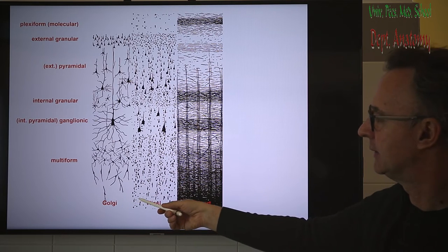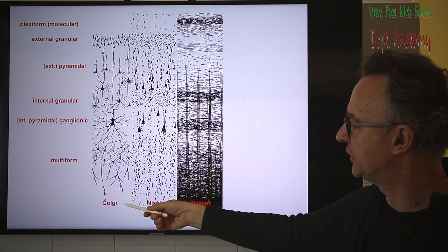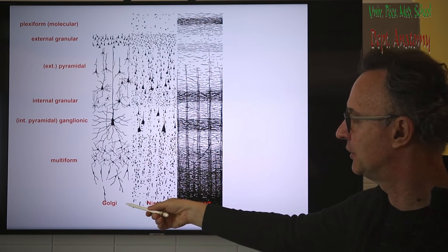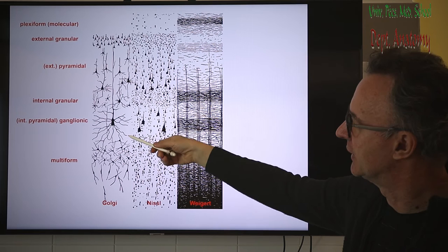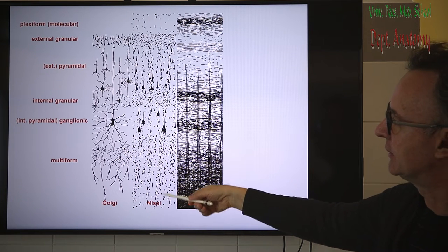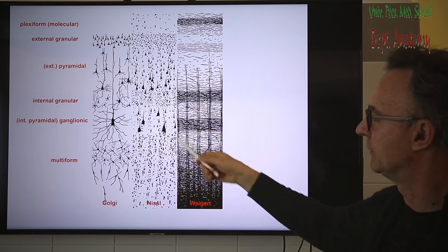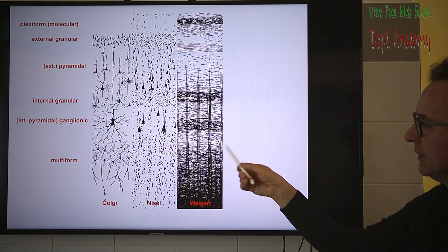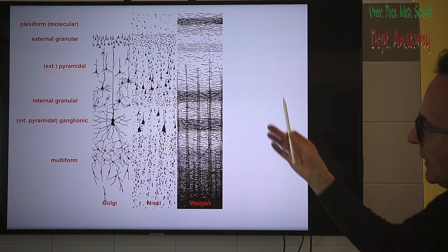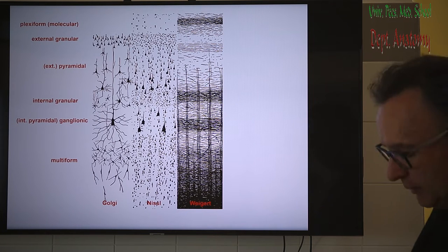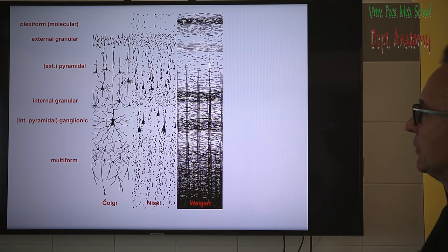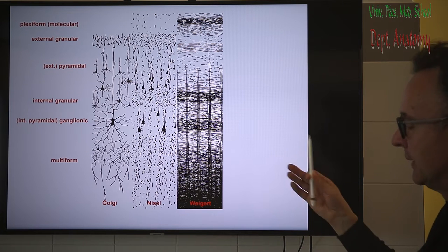This schematic figure is after Golgi staining, showing nerve cells with cell bodies and processes. The next image with Nissl staining shows all the cell bodies at the beginning of the dendrites. The third technique is the Weigert technique, which visualizes the processes and axons of the nerve cells.